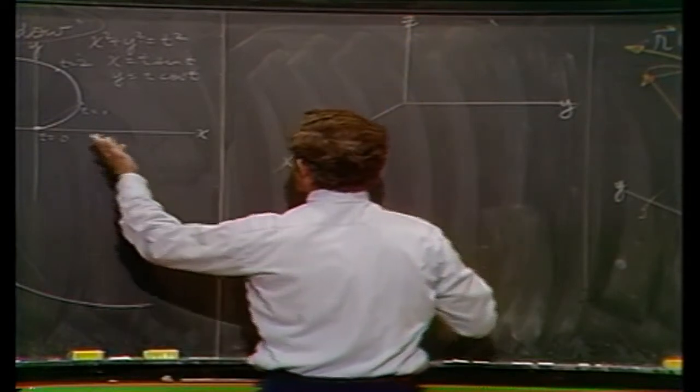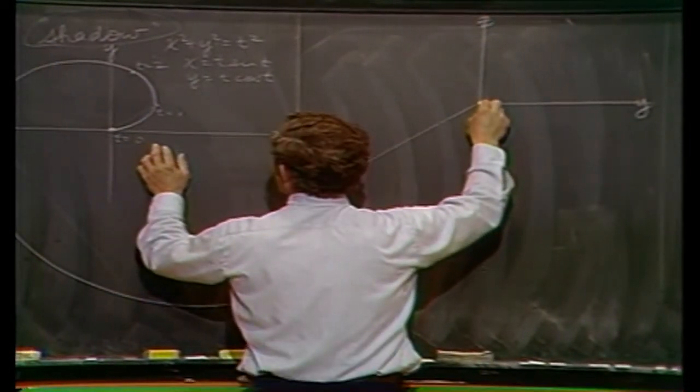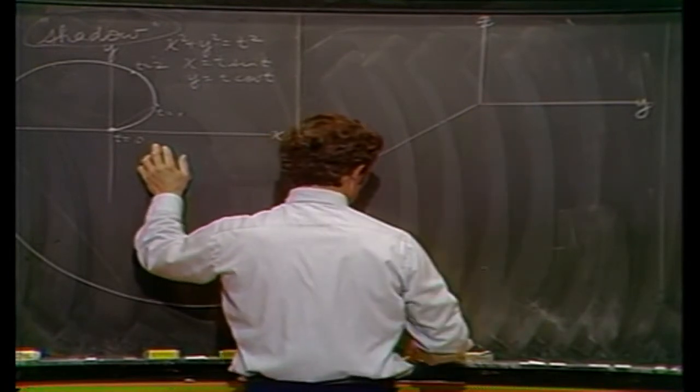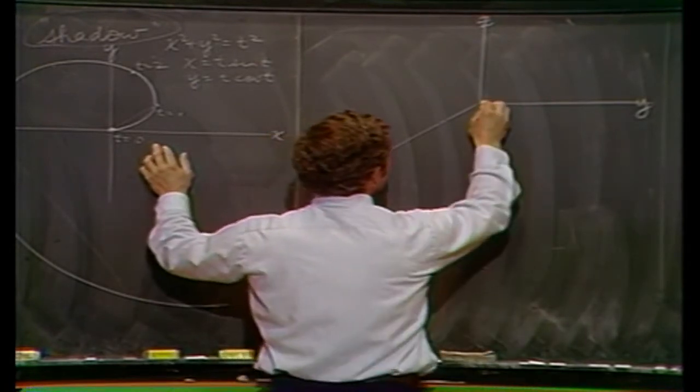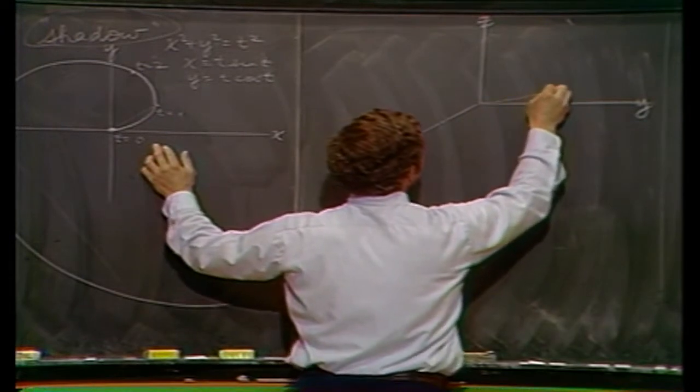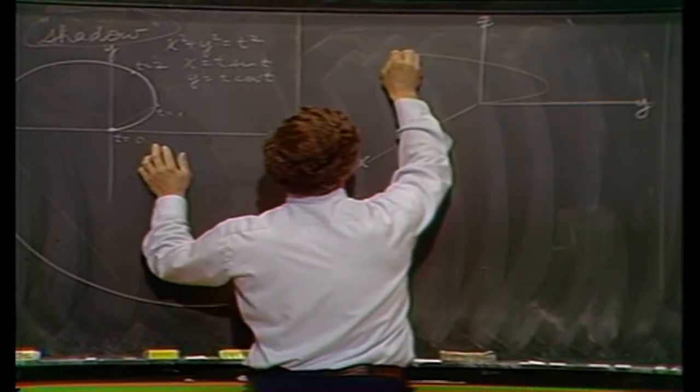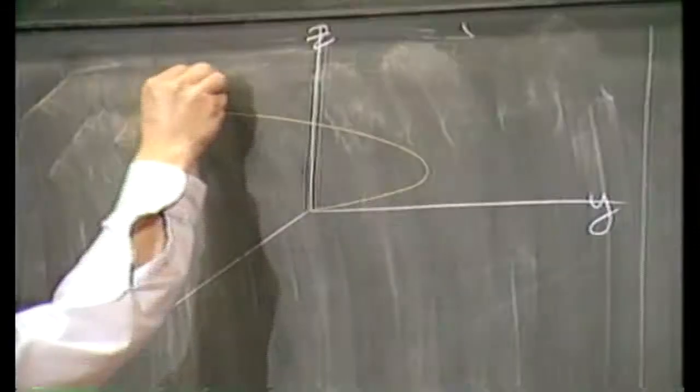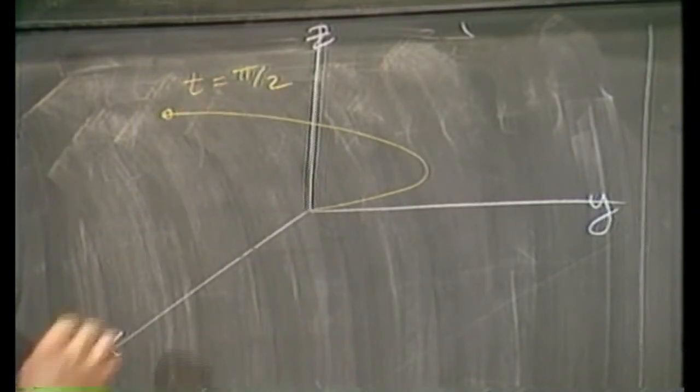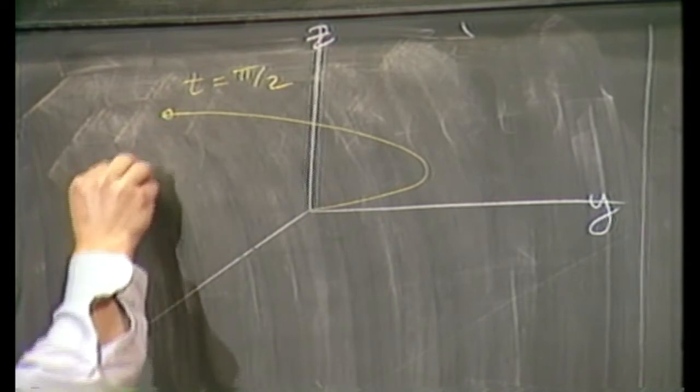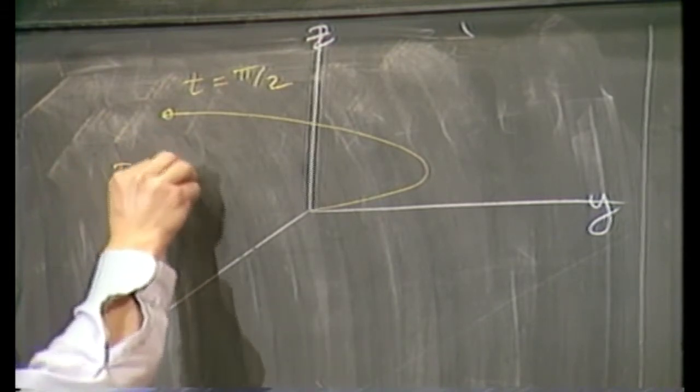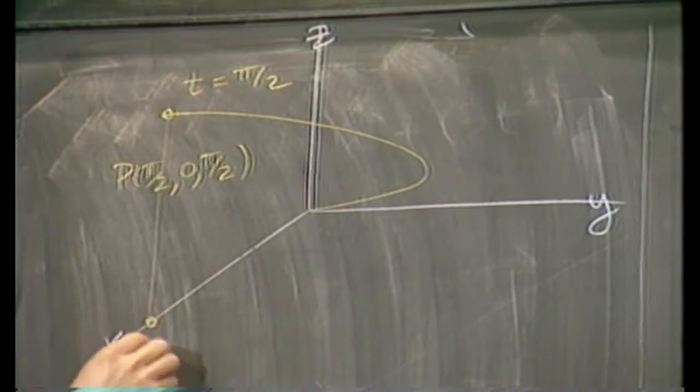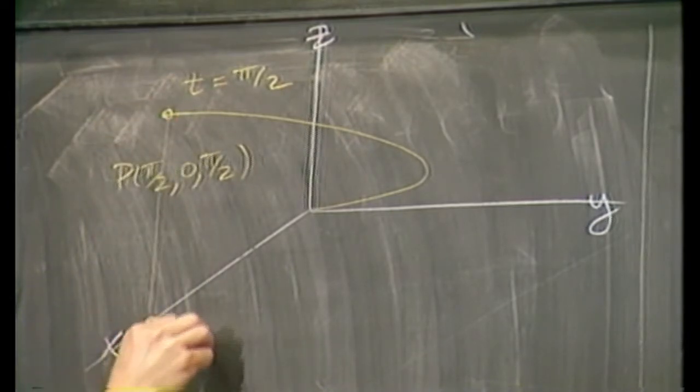So let's make a rough sketch. From the shadow picture over here, I claim the path for the fly may look something like this. And let's just stop it right here at t equals π/2. The reason I stopped it there is because the point in question had coordinates π/2, 0, and π/2. In other words, there's the shadow right at t equals π/2.